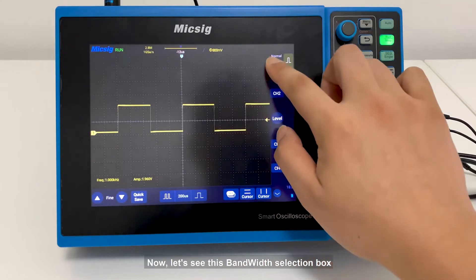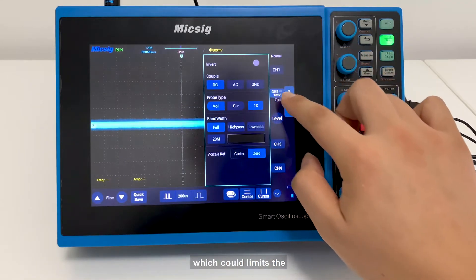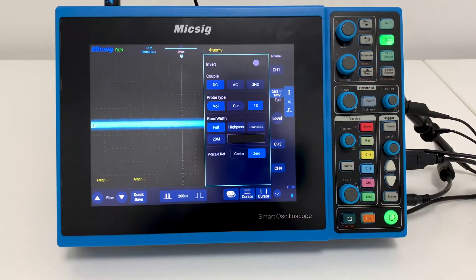Now let's see this bandwidth selection box, which could limit the bandwidth of the oscilloscope. Full bandwidth allows signals of all frequencies to pass.